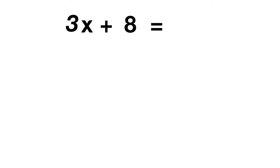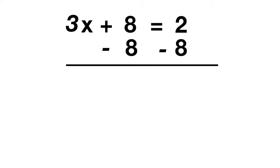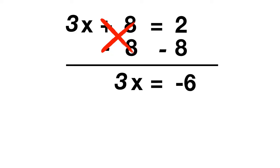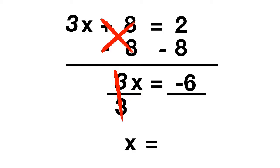Here's your last problem for today: 3x plus 8 equals 2. Remember to start with addition and subtraction — cancel out the plus 8 by subtracting 8 from both sides. The plus 8 and minus 8 cancel out, leaving just 3x. On the other side, 2 minus 8 gives you negative 6. Now you just have to cancel the 3, which is being multiplied by x, so divide by 3. That leaves you with just x, and negative 6 divided by 3 gives you your answer of negative 2.